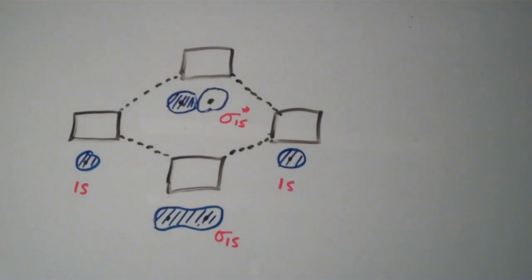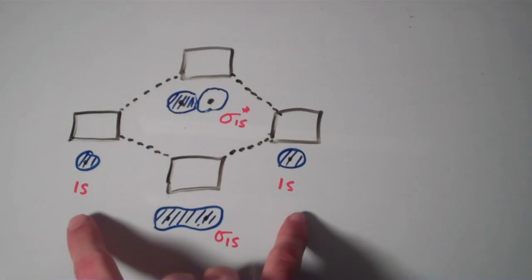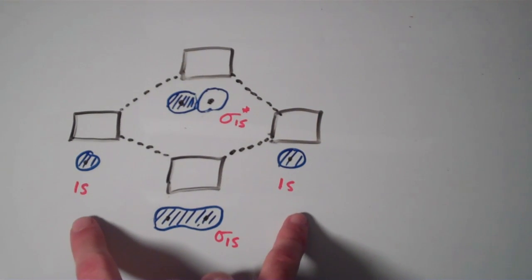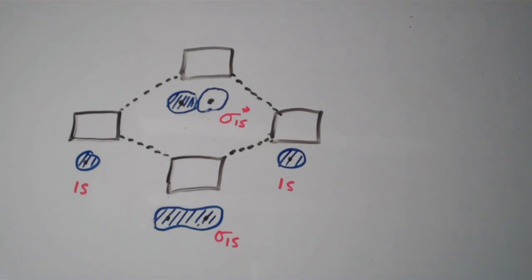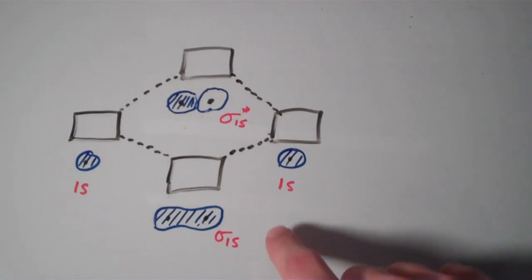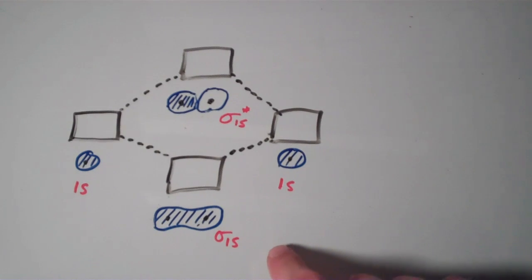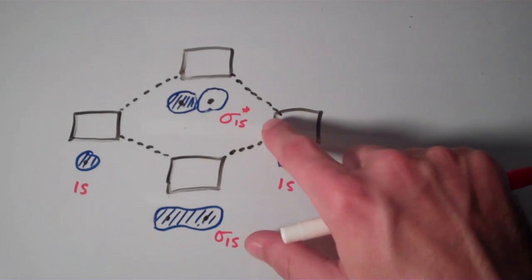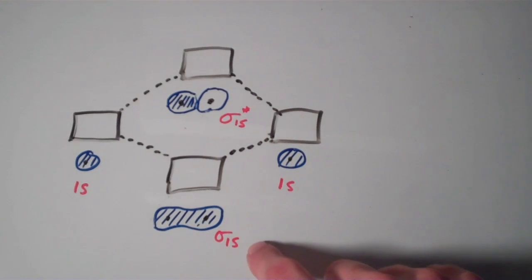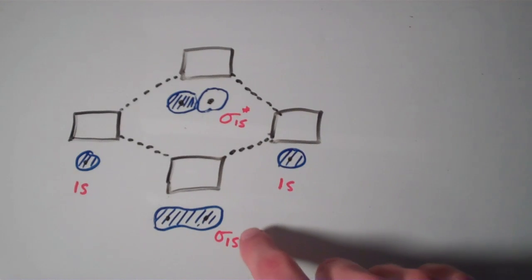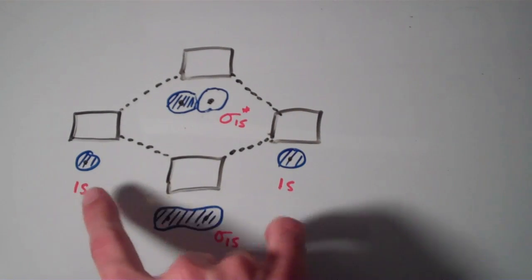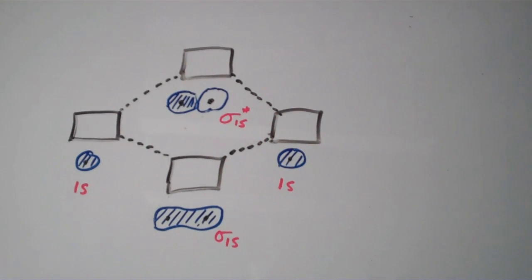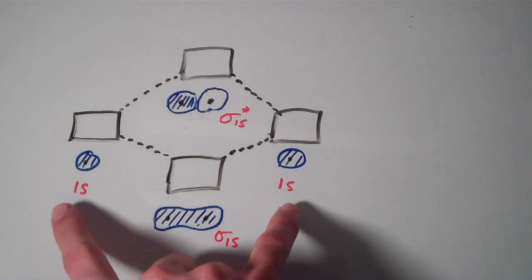In my last video, I went over the molecular orbitals of the H2 molecule. The H2 molecule is fairly simple because the valence atomic orbitals are just 1s orbitals — there are no 2s orbitals and definitely no p orbitals. Two 1s orbitals can constructively interfere to form the sigma 1s orbital, or they can destructively interfere to form the sigma 1s star molecular orbital. The sigma 1s orbital is termed bonding because it is lower in energy than the atomic orbitals from which it is formed, and the sigma 1s star is called an antibonding molecular orbital because it is higher in energy than the two 1s orbitals.